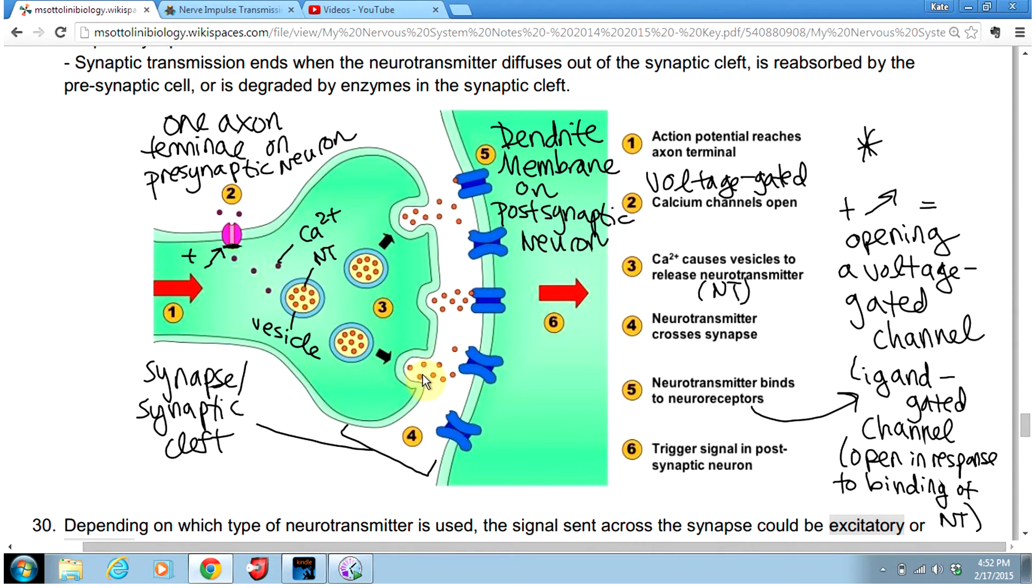Those neurotransmitter molecules are going to diffuse across the synapse until they bind to these blue channels. Here they call them neuroreceptors; I'm going to call them ligand-gated channels. Ligand-gated channels only open when a neurotransmitter particle binds to them. A neurotransmitter is a specific type of ligand or signaling molecule. Once that specific neurotransmitter binds to the ligand-gated channel, the channel is going to open. Each channel will only open in response to the binding of a particular neurotransmitter.